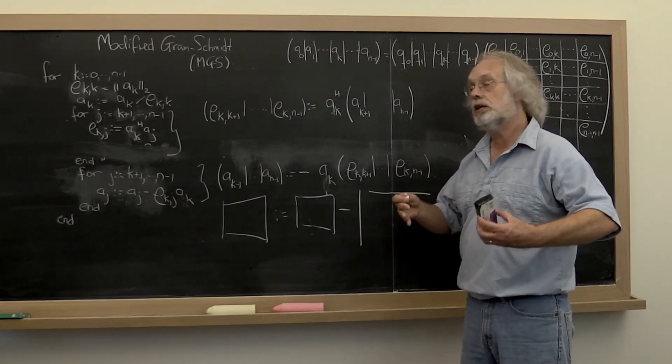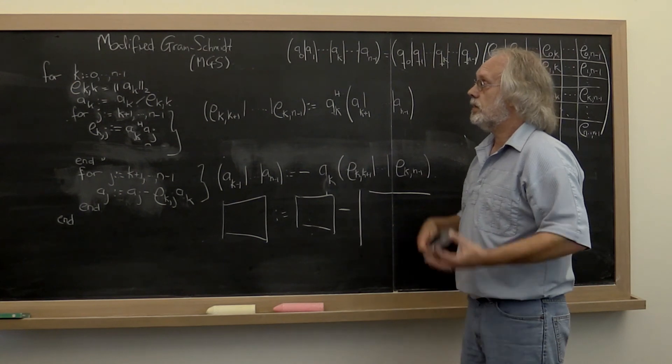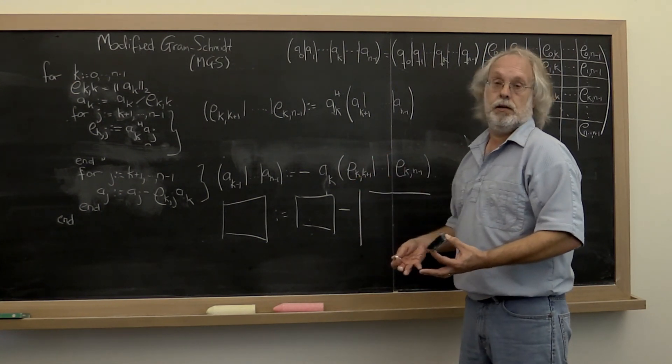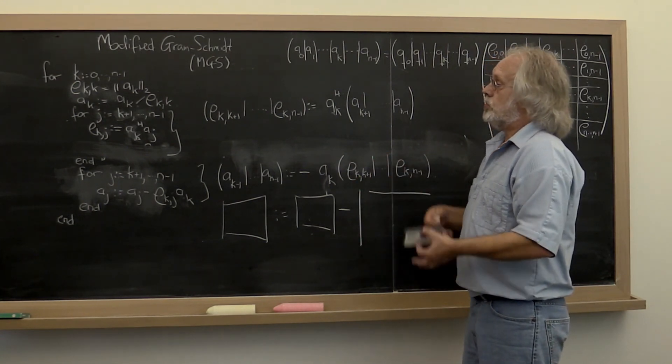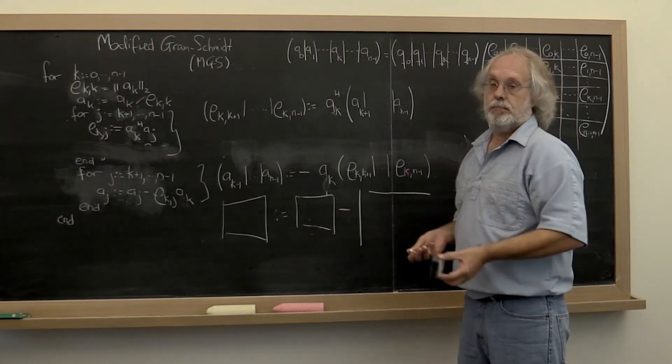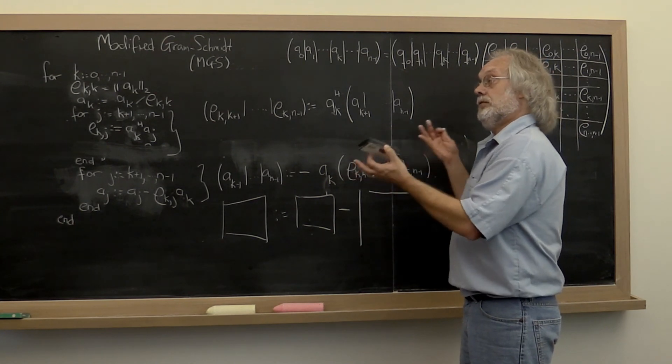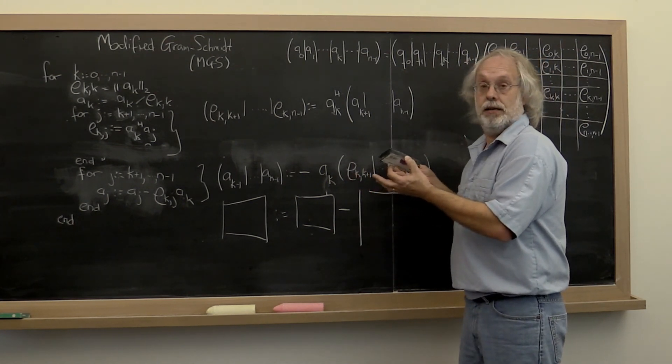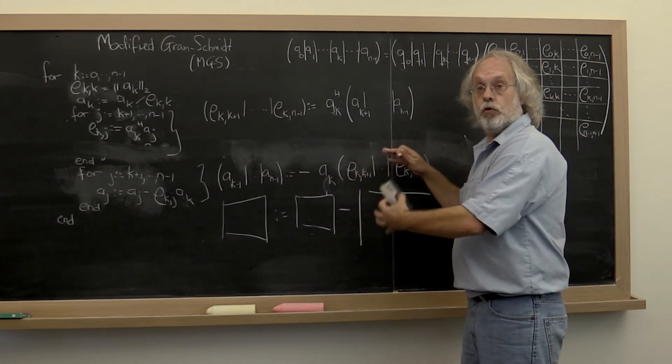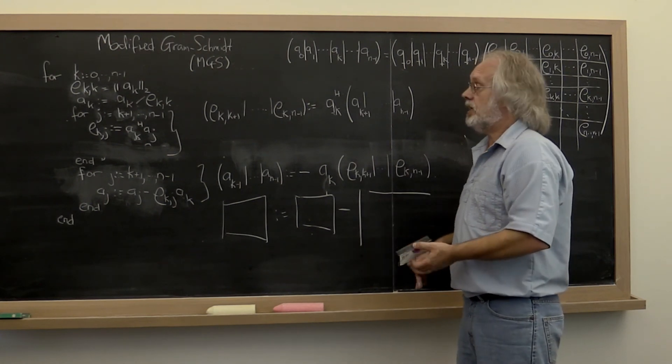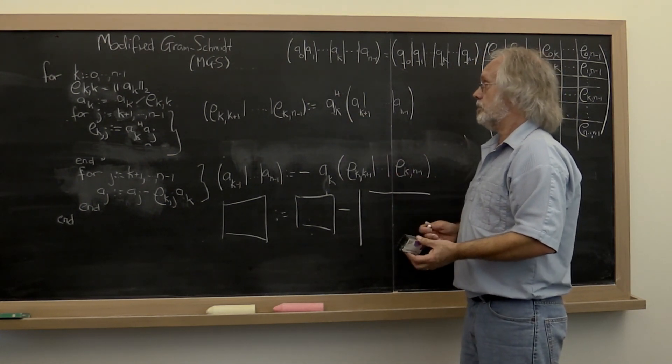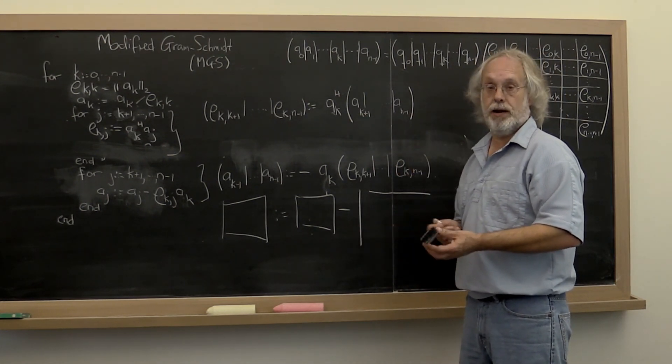So what we've done here is we have slowly morphed the classical Gram-Schmidt algorithm into the modified Gram-Schmidt algorithm, and then eventually morphed that into still the modified Gram-Schmidt algorithm but formulated so that the computation can be nicely expressed in terms of a row times matrix multiply followed by a rank 1 update.